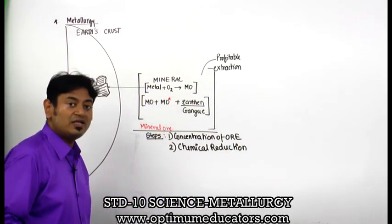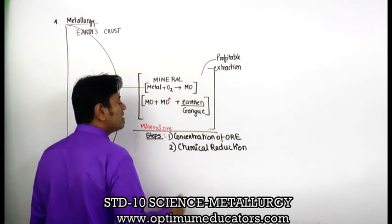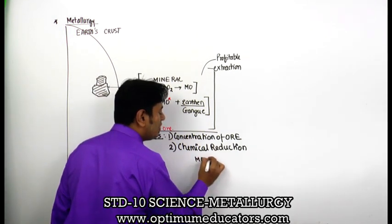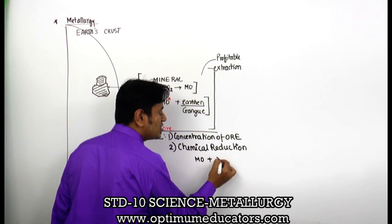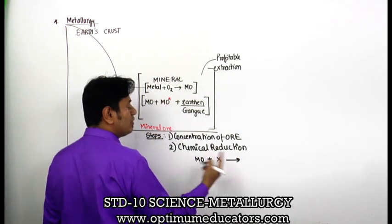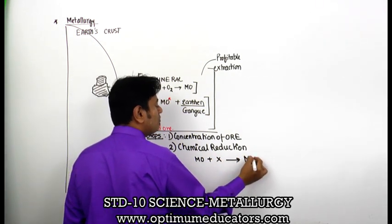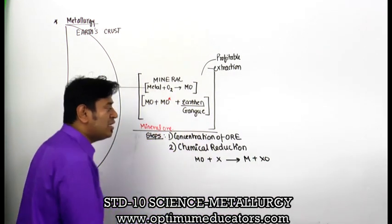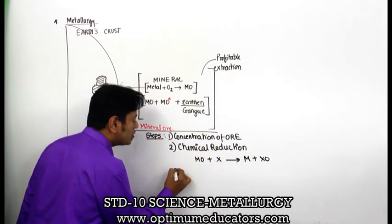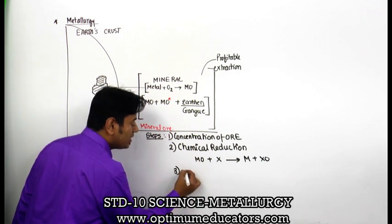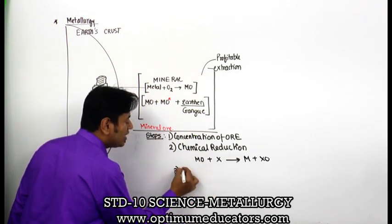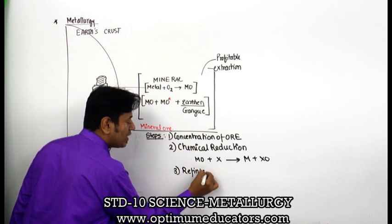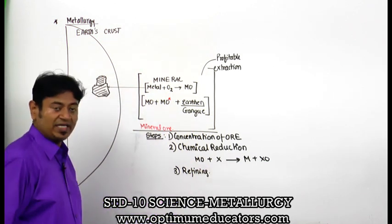Chemical reduction means removal of oxygen. So, MO will be reacted with a substance which removes the oxygen and gives me my metal M. After getting M, there will be some impurities in it. So, for removal of impurities, I will do something known as refining.